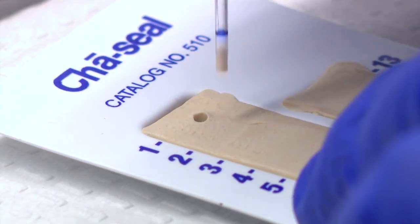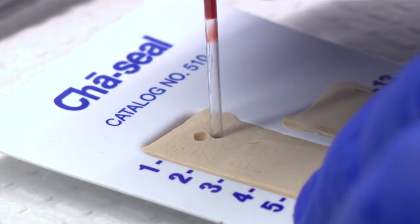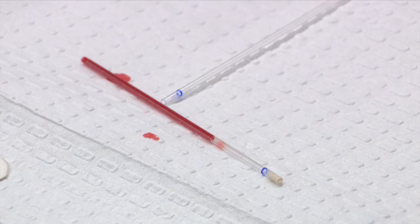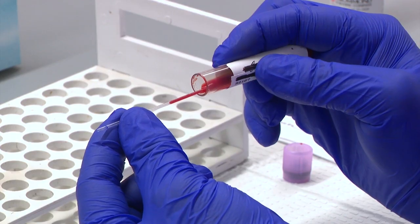The clay plug will prevent the blood from running out of the tube during centrifugation. Set the filled micro hematocrit tube on the white mat. Repeat this process for the second tube.